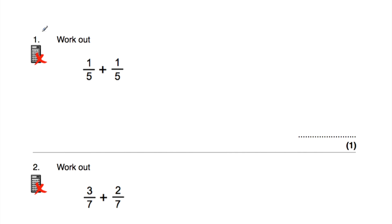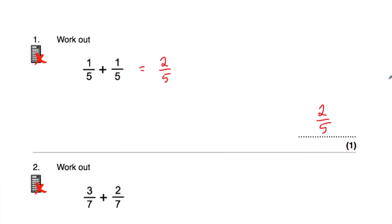Let's have a look at question number one. Question number one says: work out one fifth plus one fifth. Well, if we've got a fifth and we add another fifth, altogether we'd have two fifths. Whenever we're adding fractions with the same denominator, we can just add the numerators. One plus one is equal to two, so the answer is two fifths.